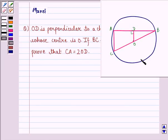So let this be the circle given to us with center O. Now OD is perpendicular to the chord AB of this circle. BC is given to be the diameter. So let us start with a solution to this question.